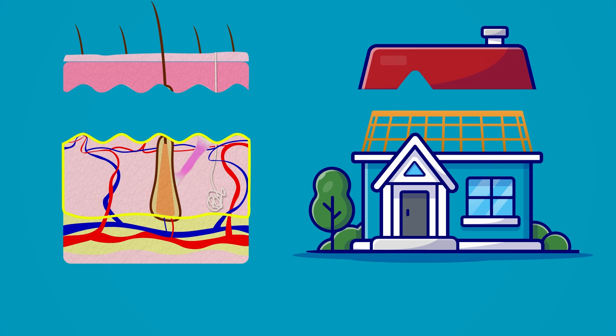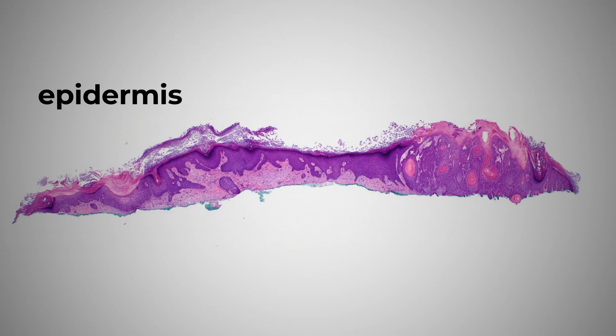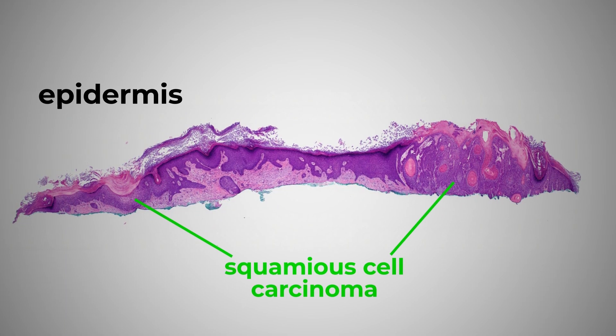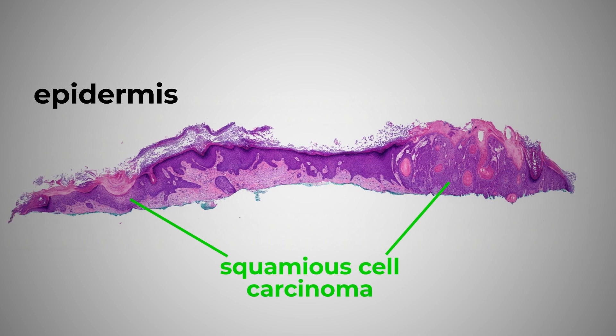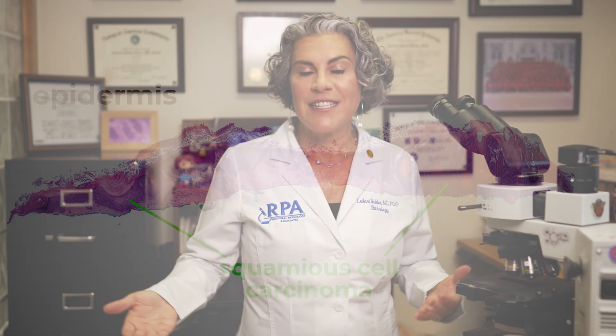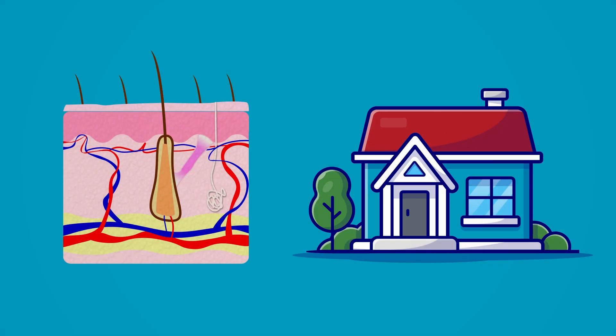For example, when you have a squamous cell carcinoma, usually it's the cells in the upper portion of the epidermis that are atypical. If those cells are atypical, I will look for other criteria to help me decide whether or not this is a squamous cell carcinoma, or another type of carcinoma like basal cell, which usually comes from the bottom layer cells in the epidermis.